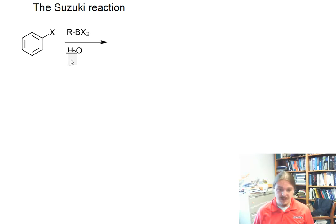This reaction needs water and it needs a base and it needs a palladium species, often like palladium chloride or palladium acetate or palladium acetate with some organic ligands or whatever. And what this does is it replaces the X on the arene with the R group from the boron compound.